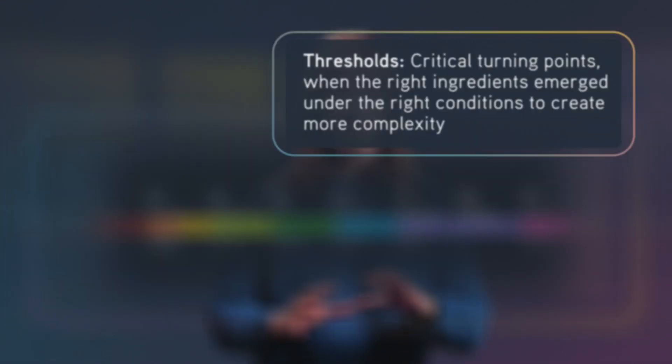Something like, the sun was born. Or, living things exist now. Some units have multiple thresholds and some have none.